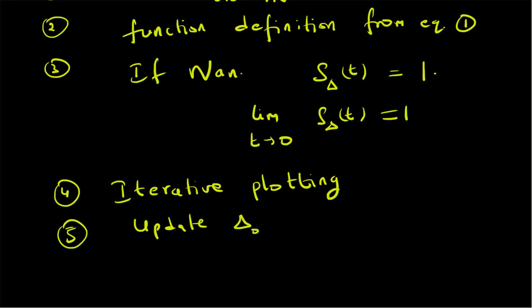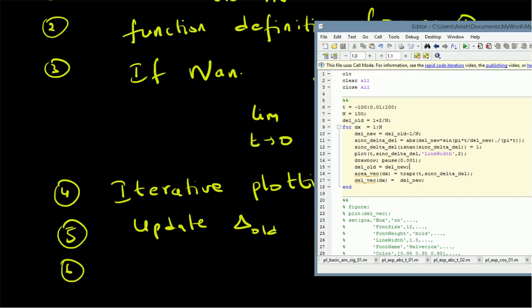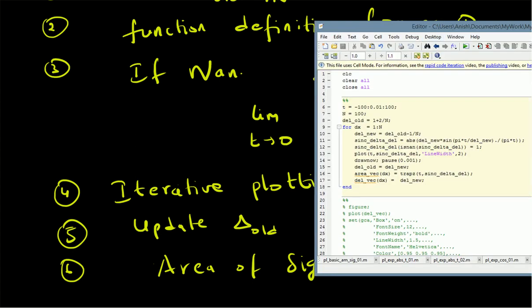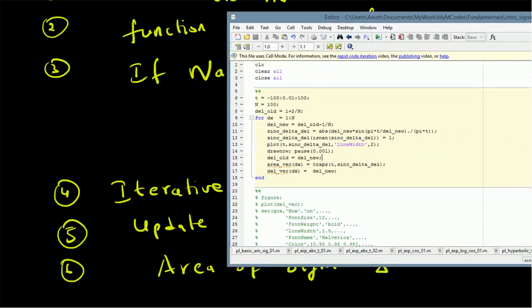Next, we update delta_old. Then we compute the area of the signal, and finally do some bookkeeping by storing the area in a vector so we can plot it later. That completes the algorithm for building an approximate impulse signal.